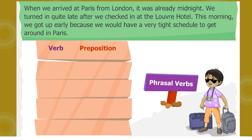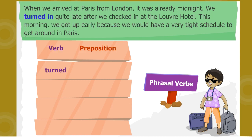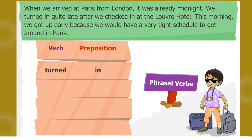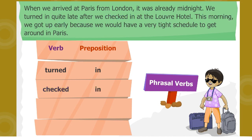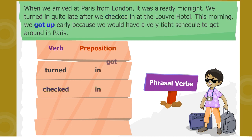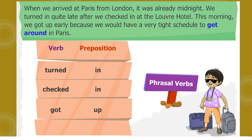For example, 'turned in' — turned is the verb and in is the preposition. 'Checked in' — checked is the verb and in is the preposition. 'Got up' — got is the verb and up is the preposition. 'Get around' — get is the verb and around is the preposition.